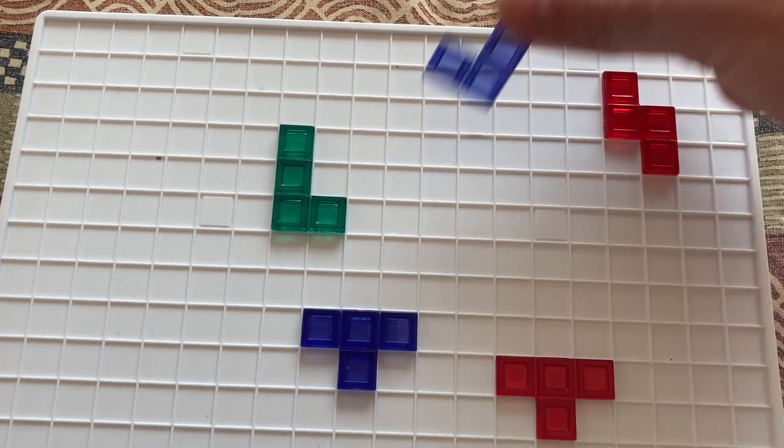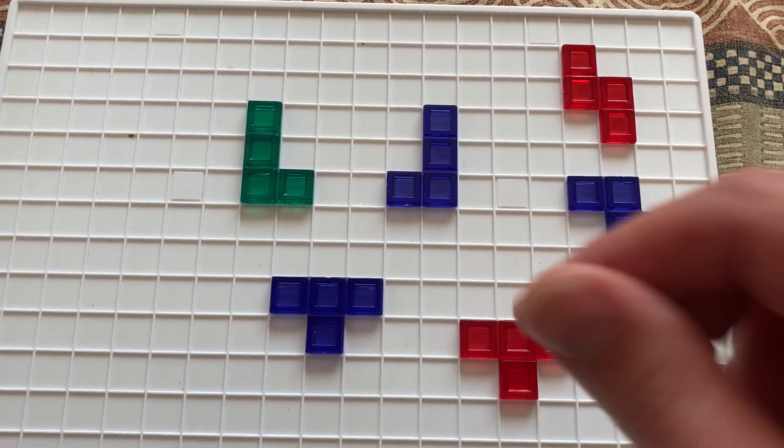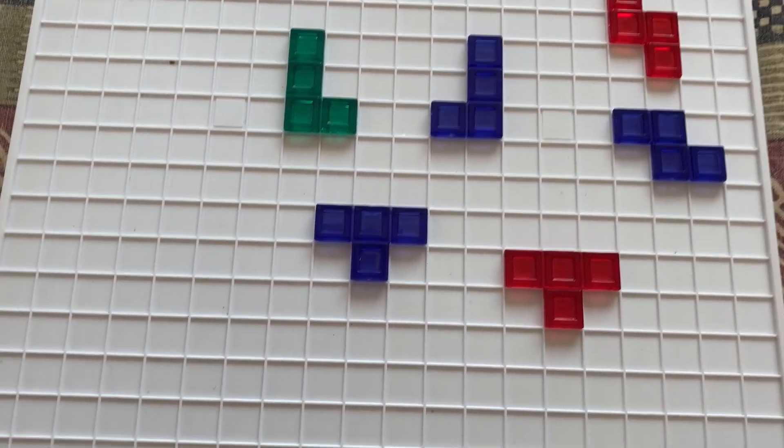So we've got a few ideas there to go through that again. So we've got reflection, translation and rotation, as well as the idea of symmetry.